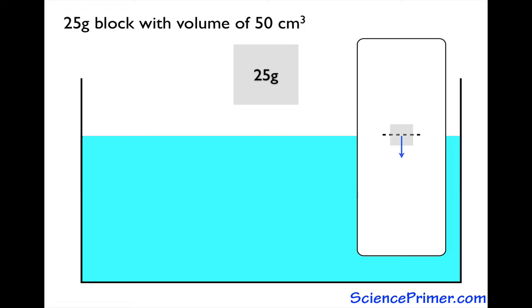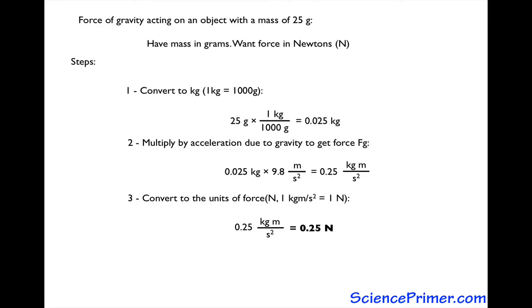In this example, we have a 25 gram cube. To figure out the force of gravity, we convert the 25 grams to kilograms multiplied by the acceleration due to gravity, which gives us a force of 0.25 newtons.